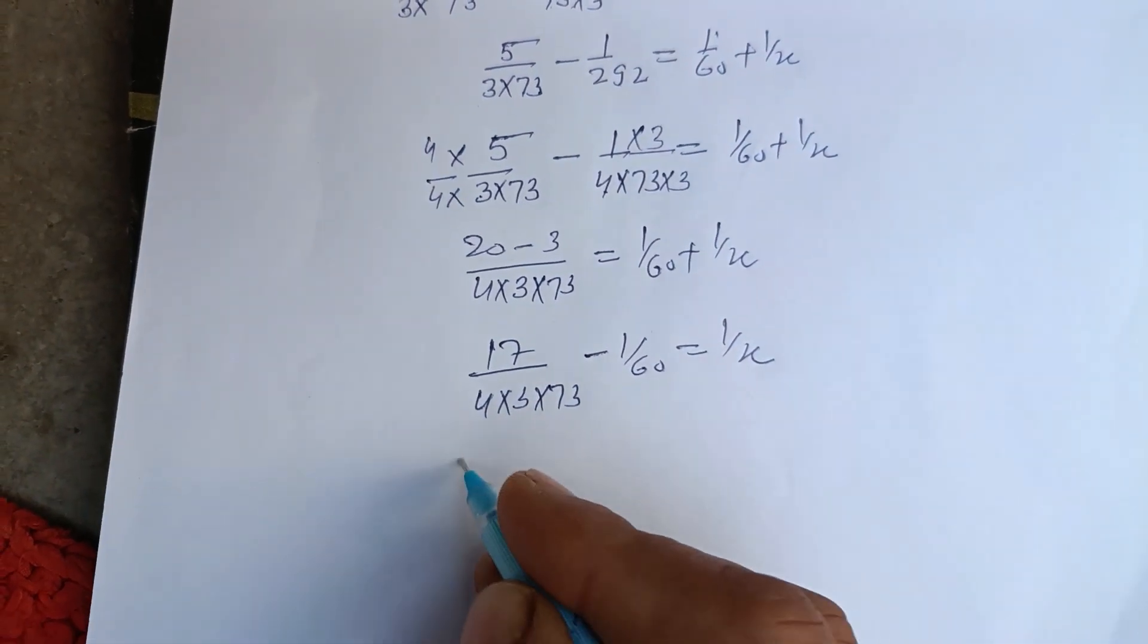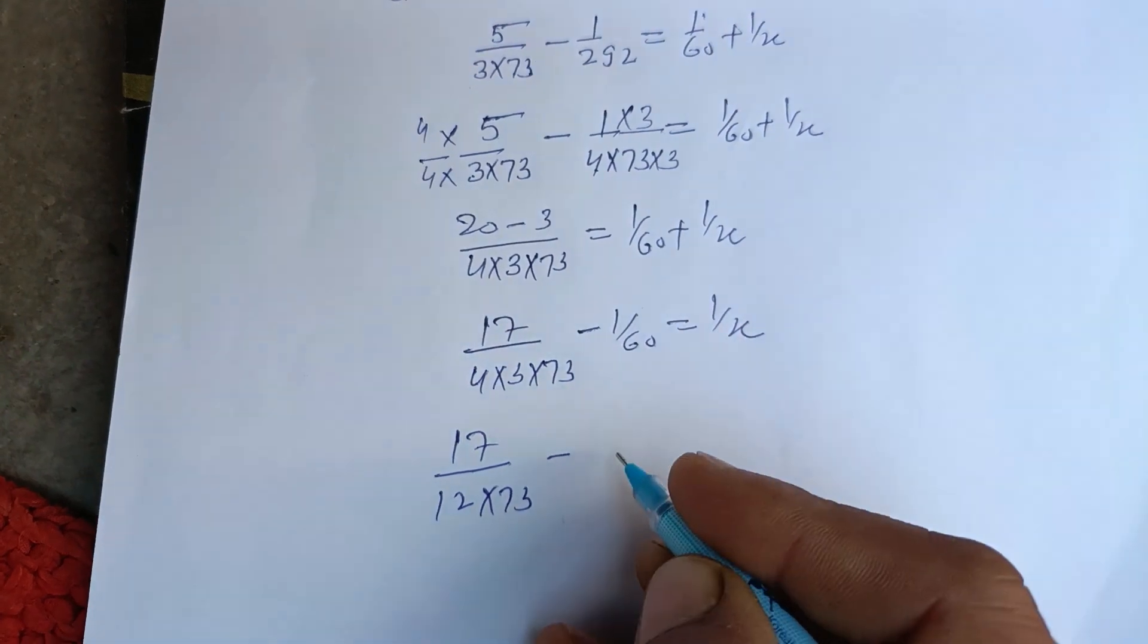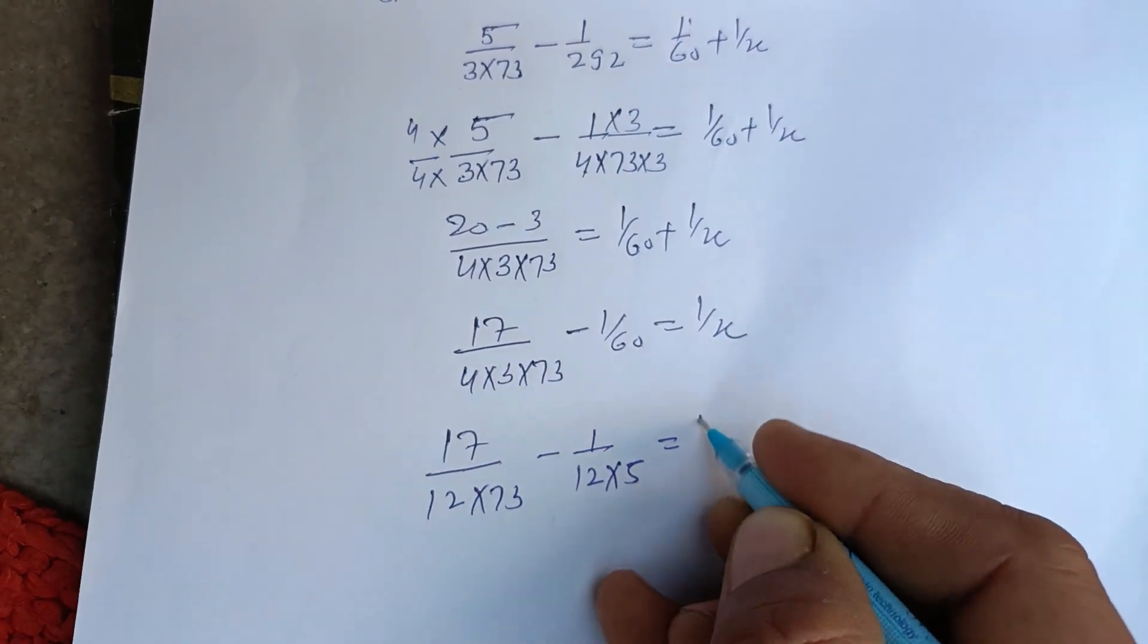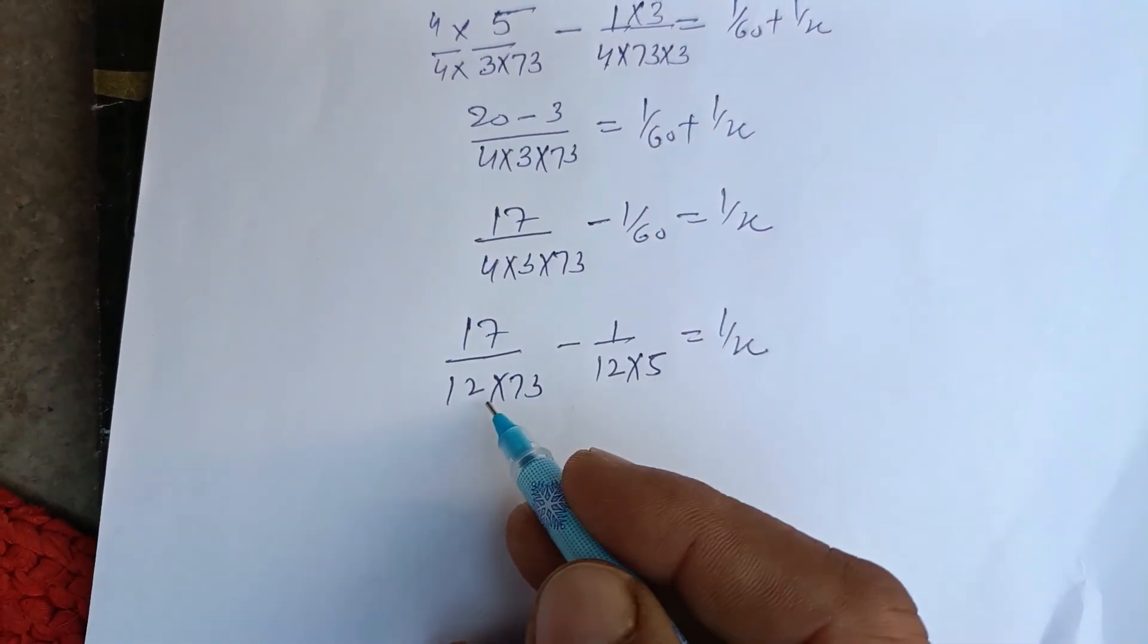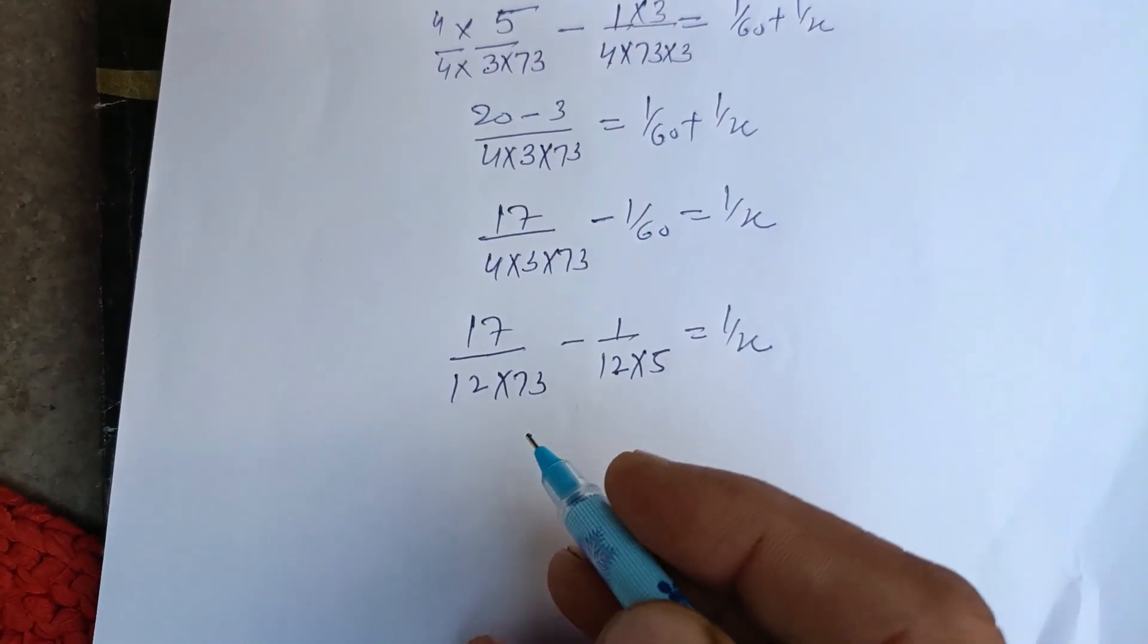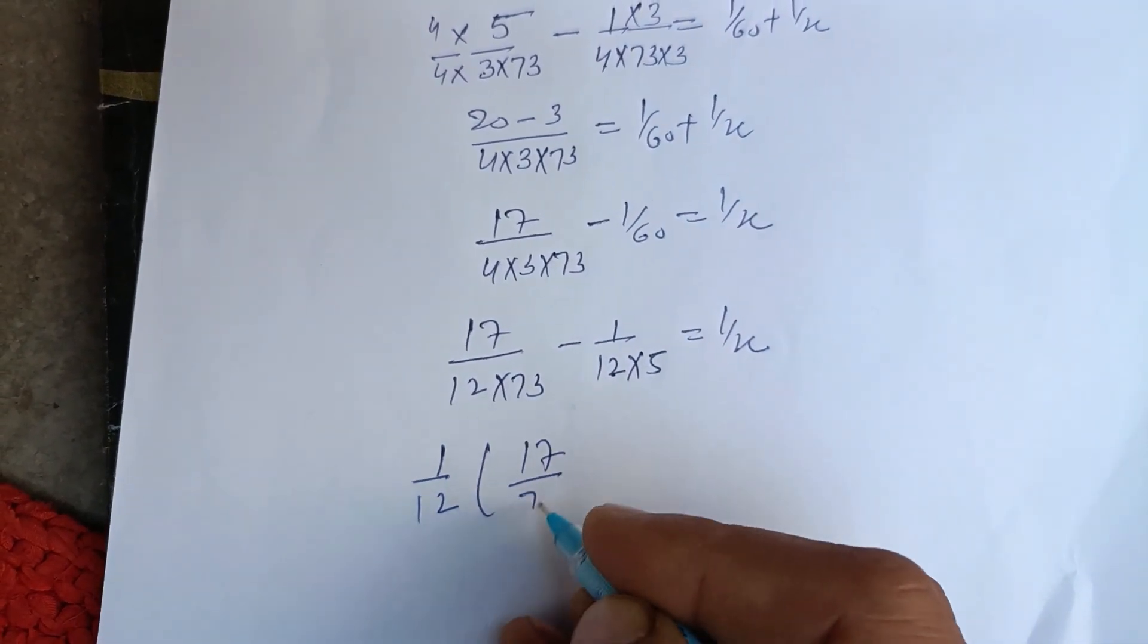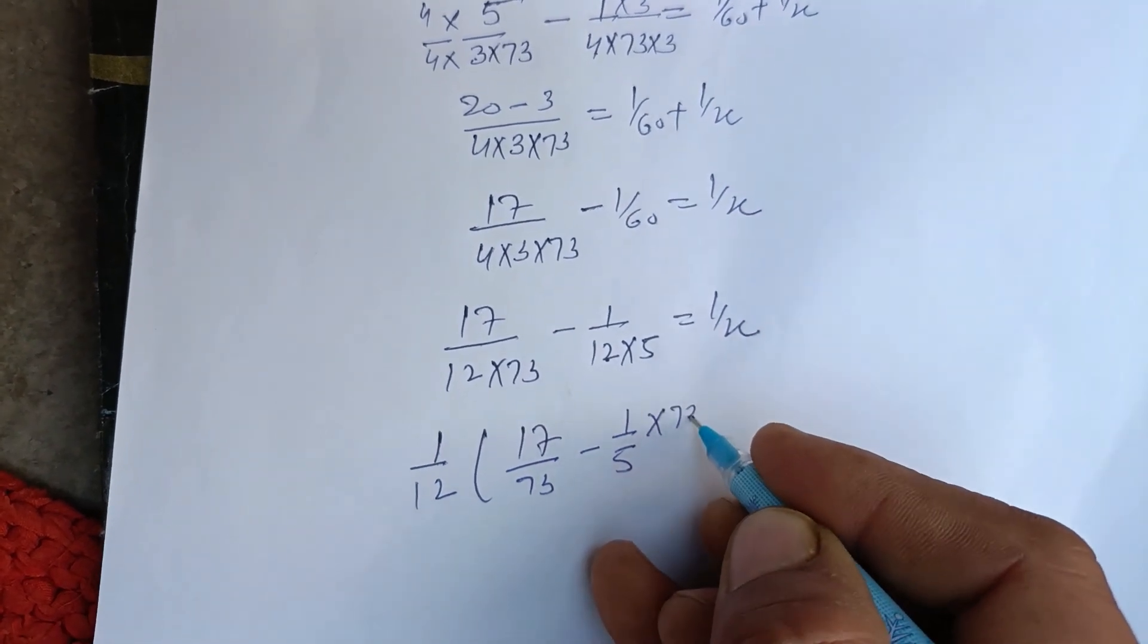We write 17/(12×73) - 1/(12×5) = 1/x. Now we make the denominator same. 1/12 is common: 1/12 × [17/73 - 1/5] = 1/x. We multiply this by 73 and this by 5 to make the denominator same.